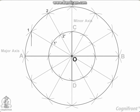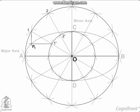Through point 1' on the major axis circle, draw a line parallel to CD, the minor axis. Through point 1' on the minor axis circle, draw a line parallel to AB, the major axis. The point P1 where these two lines intersect is on the required ellipse.